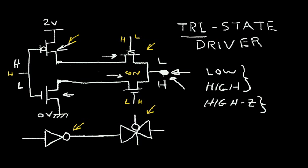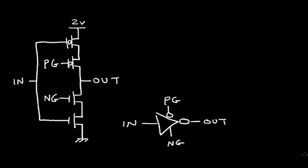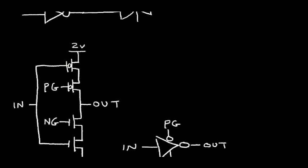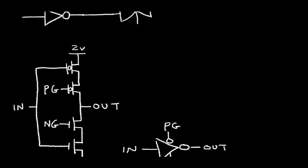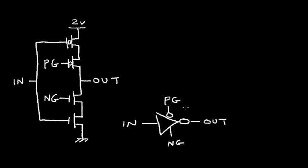Let me redraw this new tri-state driver circuit. This is our new tri-state driver — it's the same as the old circuit, just drawn a little differently. This is my P-gate connection and my N-gate connection. I have an NFET in series with another NFET, and a PFET in series with another PFET. Here I'm introducing a new symbol for this tri-state driver: it looks like an inverter with a gate terminal, with the P-gate at the top and the N-gate drawn at the bottom.